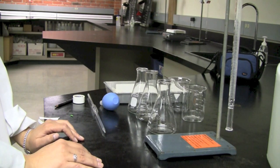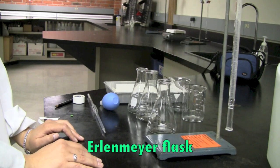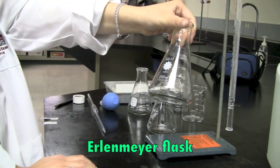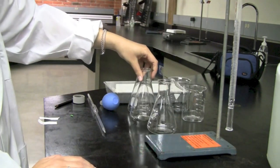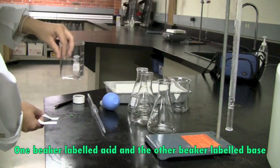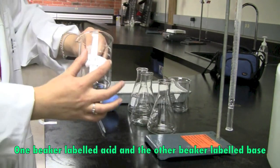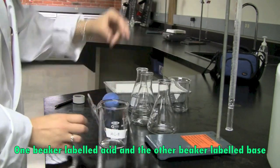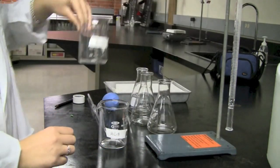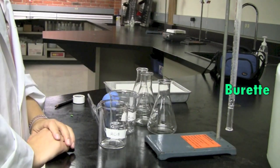So here are some of the materials that we're going to need. We're going to need a 125 milliliter Erlenmeyer flask, a couple beakers, one labeled acid and one labeled base. You're also going to need a burette.